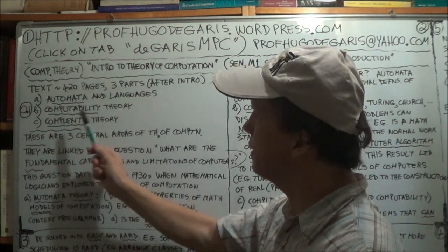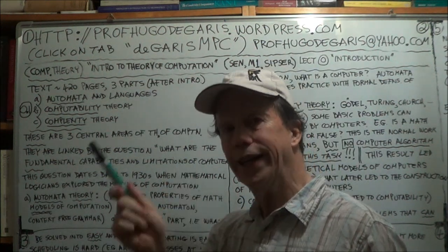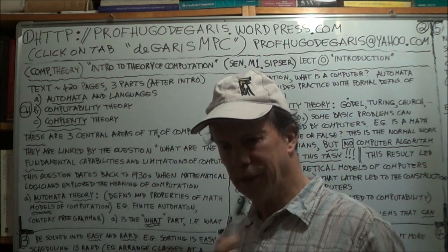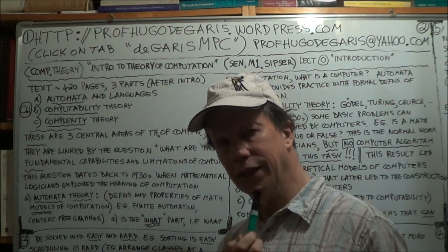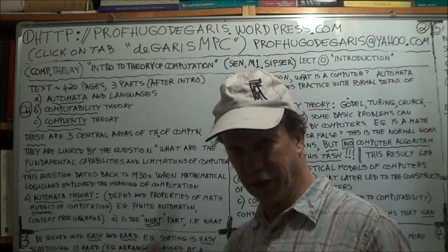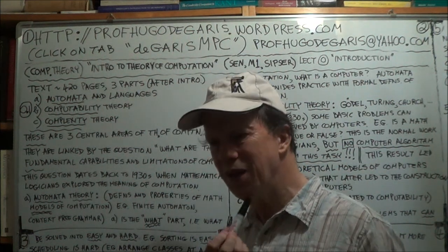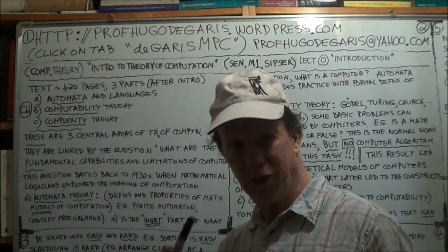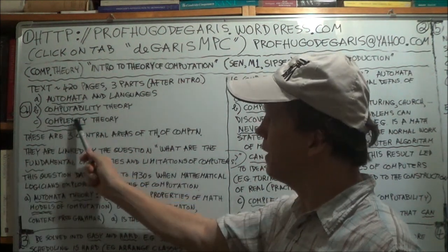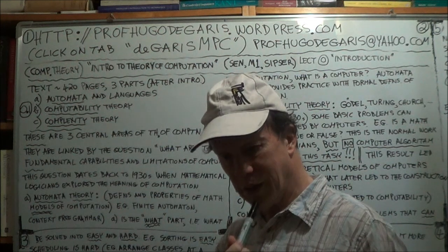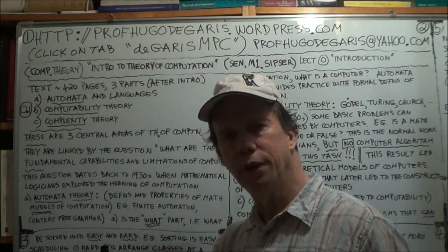Complexity is sort of linked to computability. For those tasks that are computable — that can be computed, calculated, solved — some of them seem fairly easily done and don't take a huge amount of effort on the part of the computer. But other problems just slurp up huge amounts of time and memory. They are hard problems. Complexity theory asks: what is it about a particular problem that makes it easy or hard for a computer to solve?